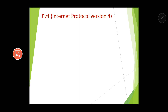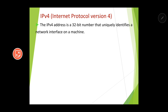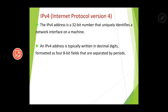IPv4 is a 32-bit number that uniquely identifies a network interface on a machine — this is very important and often asked as an exam question. It is a 32-bit addressing scheme typically written in decimal digits formatted as four 8-bit fields separated by periods. Each 8-bit field represents one byte of the IPv4 address, written in dotted decimal notation.